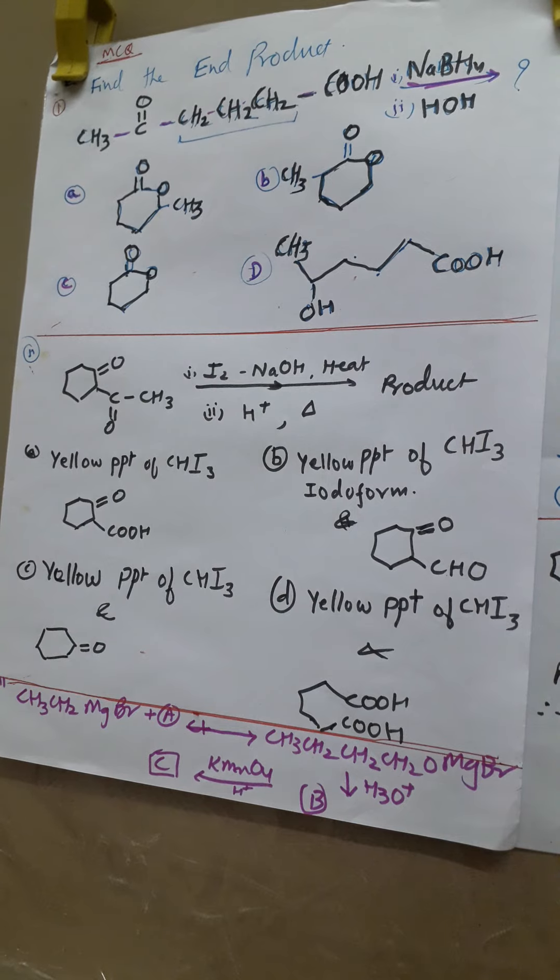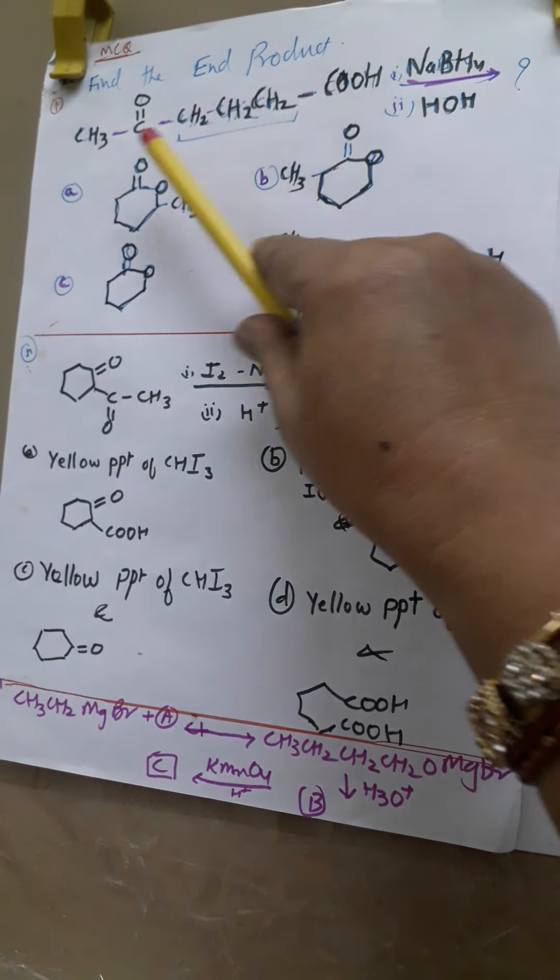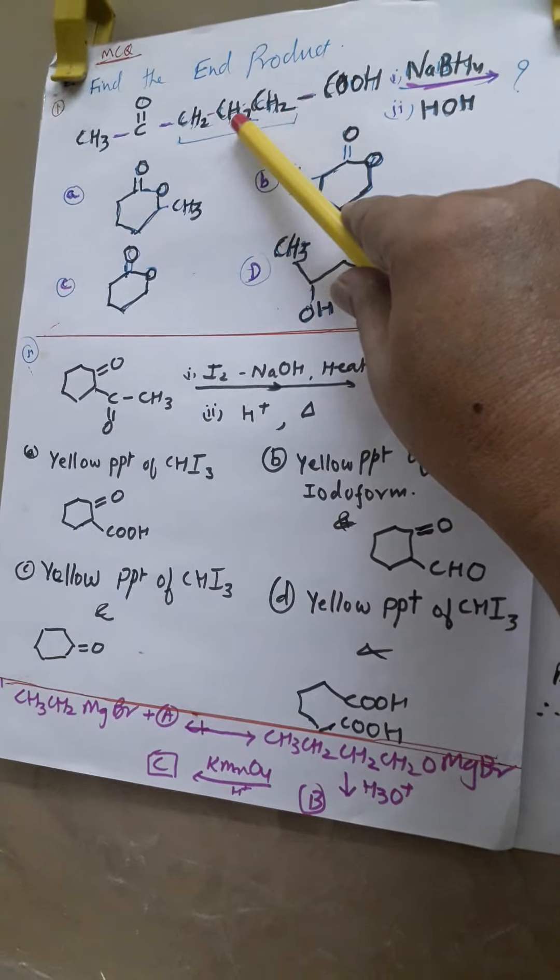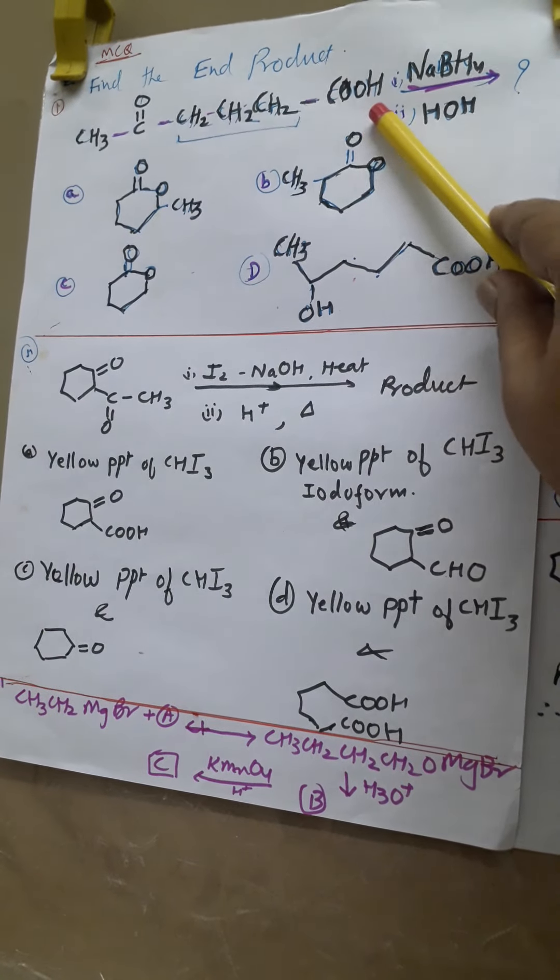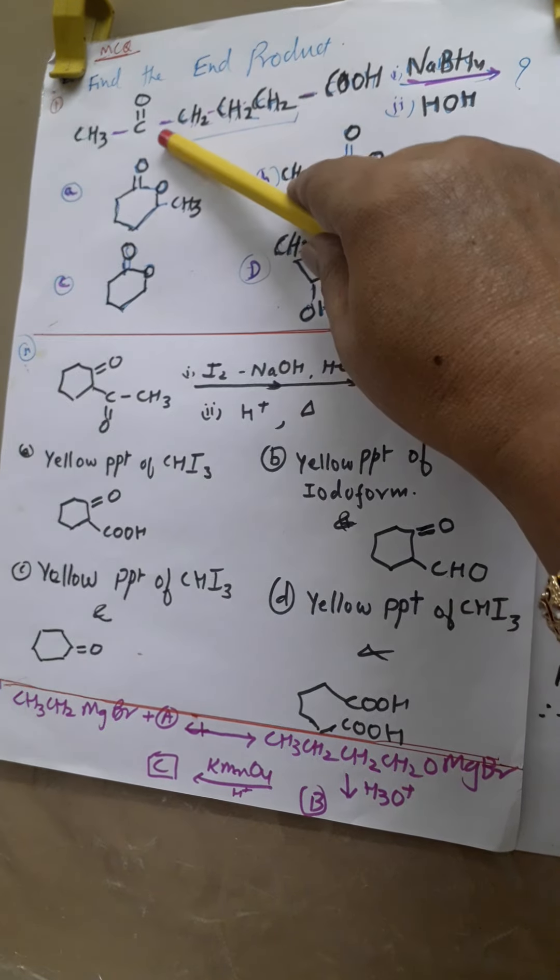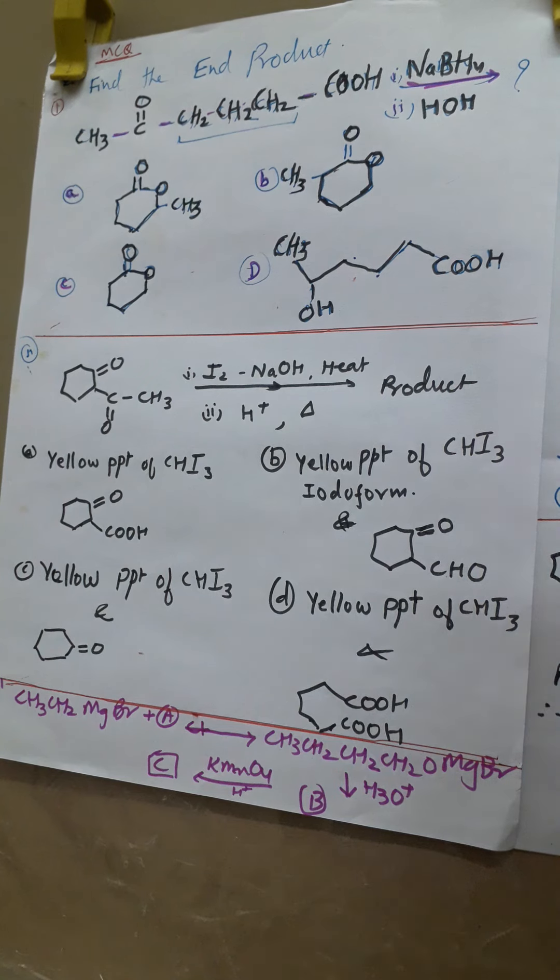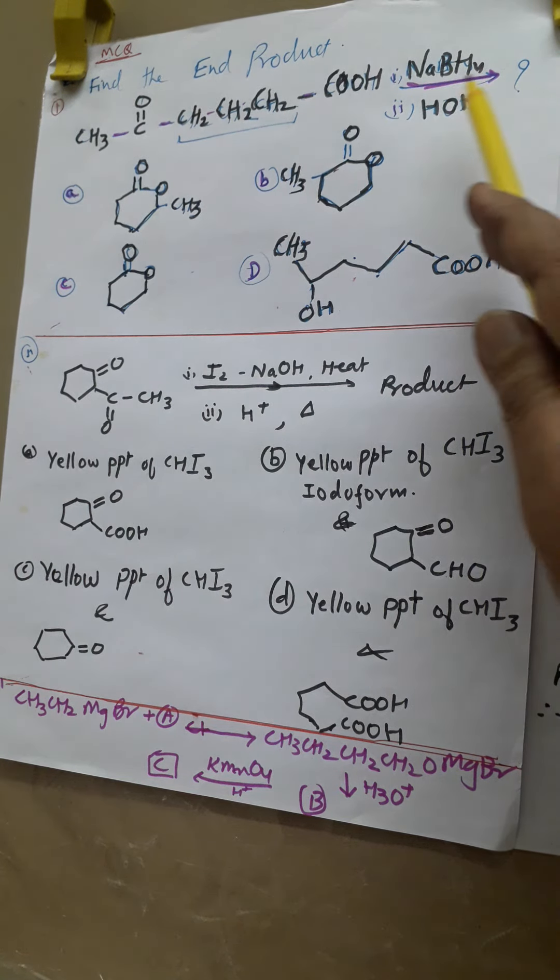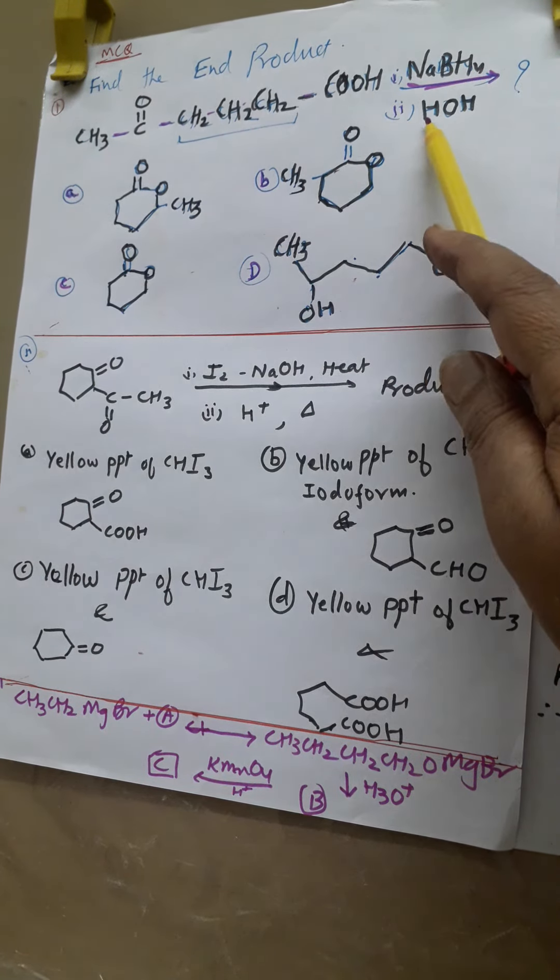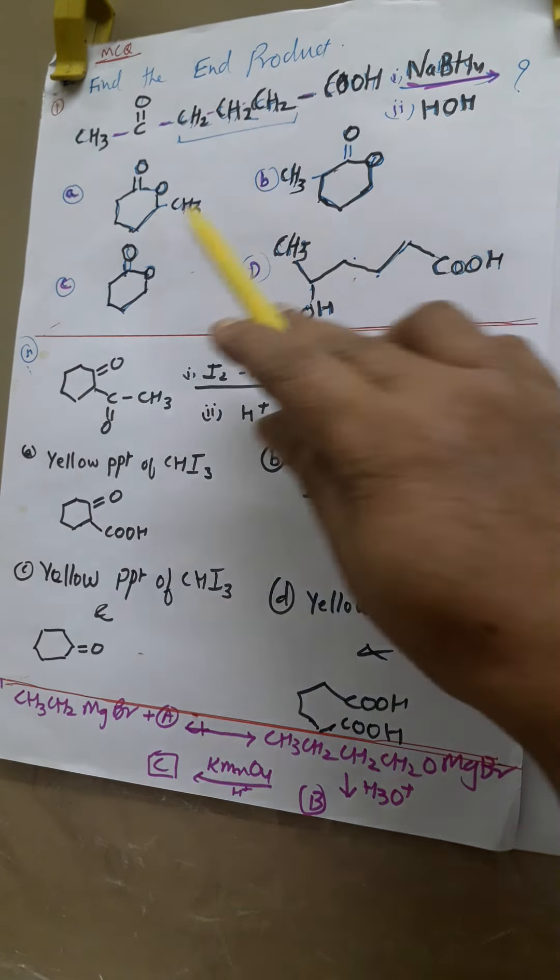It is just coming soon. So here find the product CH3-CO-CH2-CH2-COOH, that is carboxylic acid group is here and keto group is here, and NaBH4 is acting on it followed by hydrolysis.